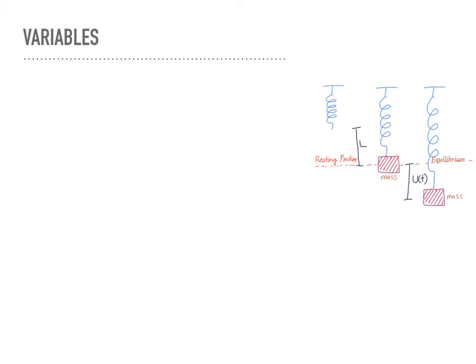The resting position can be considered as the equilibrium solution of a system — positions where the mass will eventually reach. By convention, since it's at the equilibrium solution, the position of the mass equals zero at the resting position. In physics, if a motion is moving downward, we have a positive position.